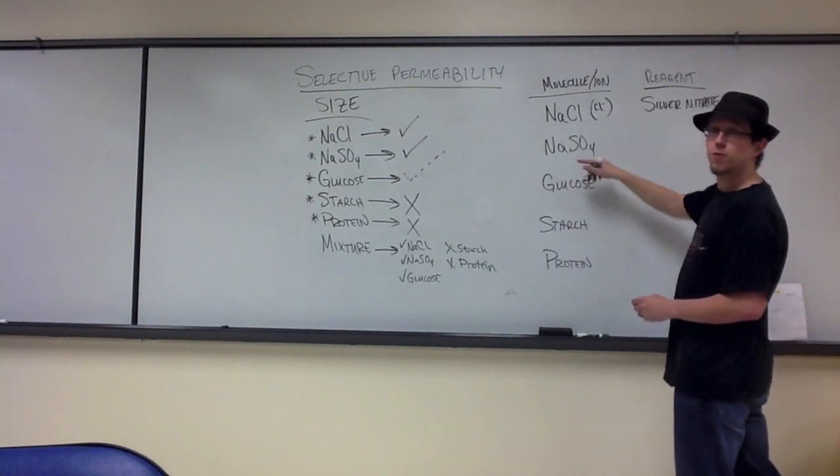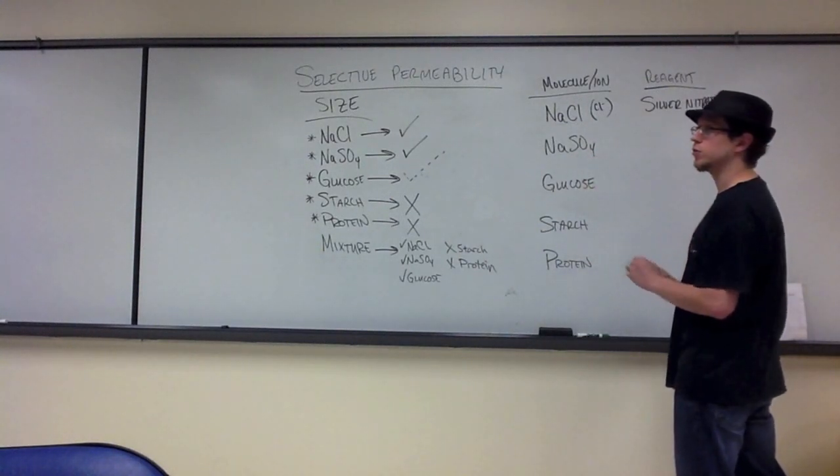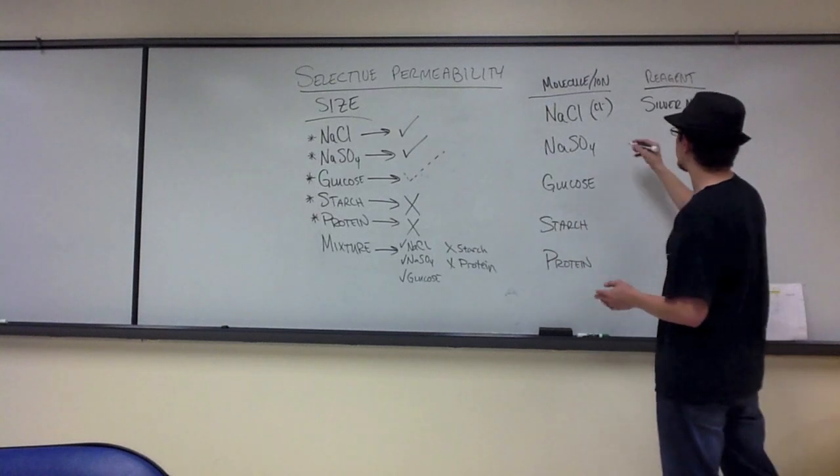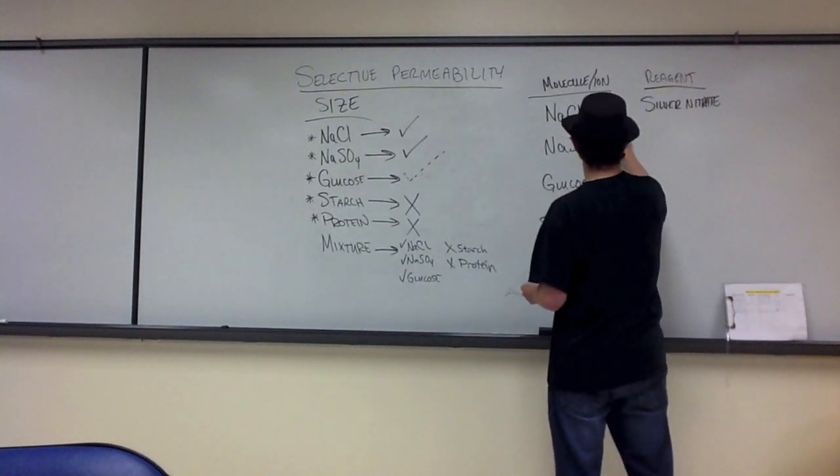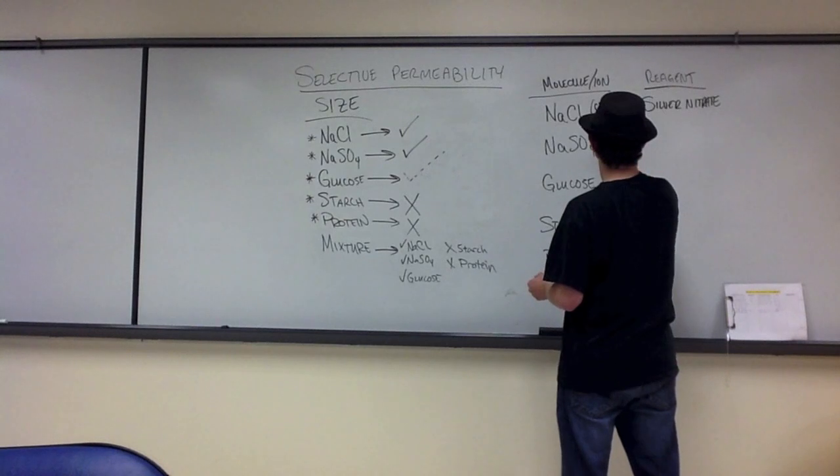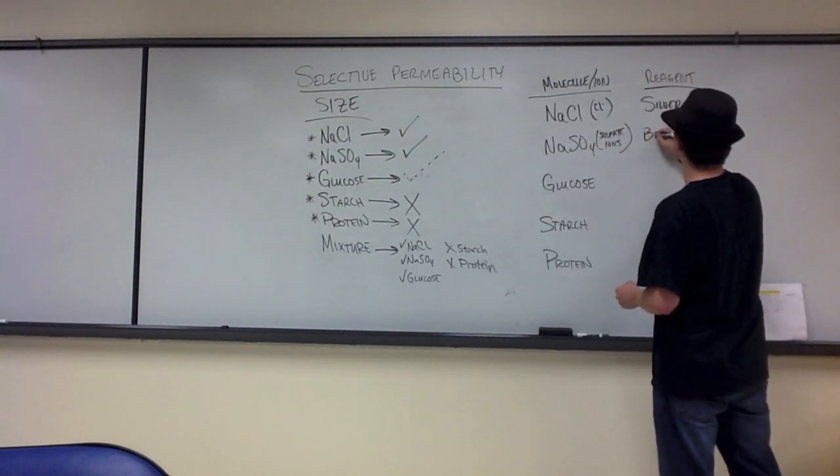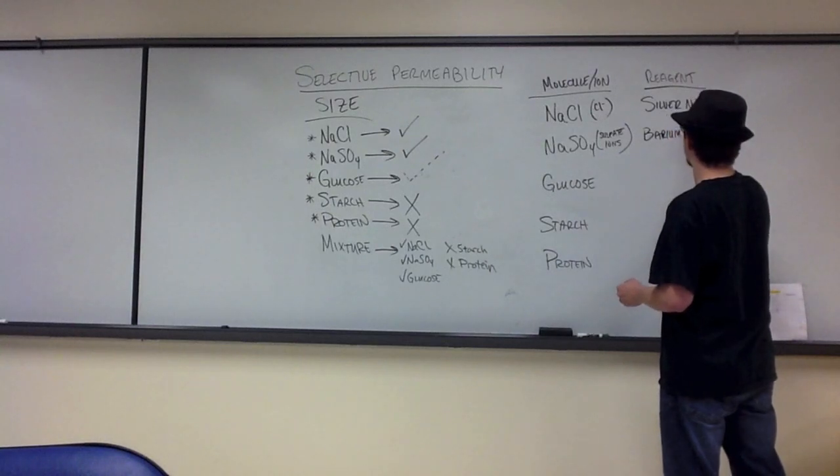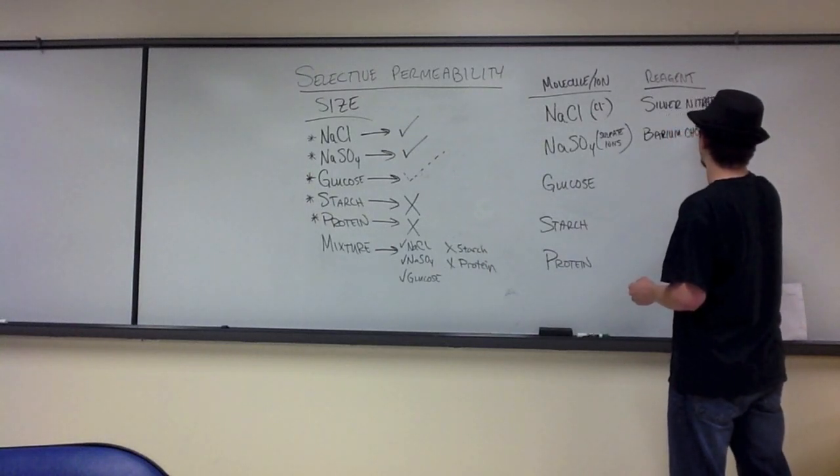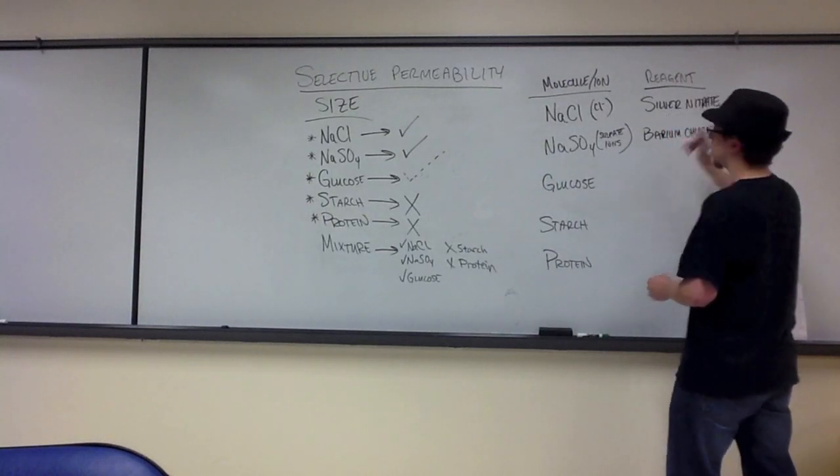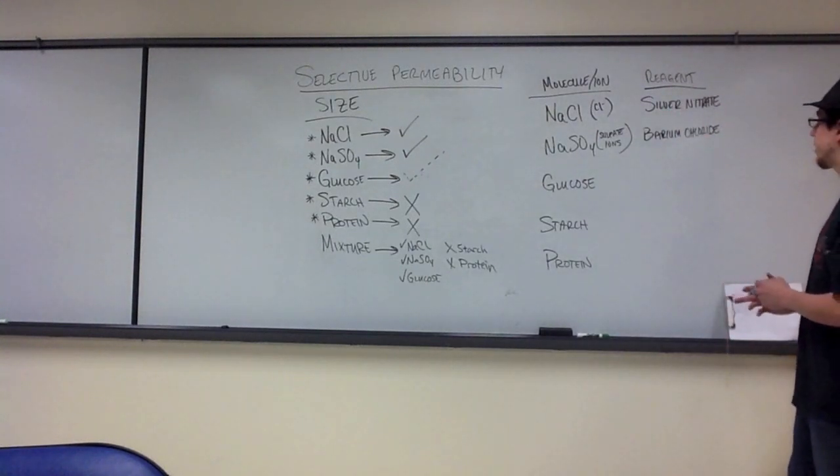For sodium sulfate, it too can dissociate into sodium ions and sulfate ions. So again, we're going to be looking for sulfate ions. And to do that, we're going to use a solution called barium chloride. And I'll talk about what colors we're looking for here in just a second.